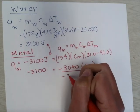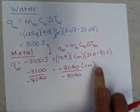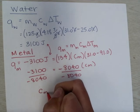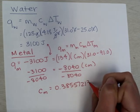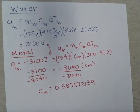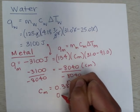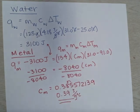Now my negatives cancel. My specific heat can't be negative. But negative 3,100 divided by negative 8,040 gives me a specific heat of the metal to be 0.385572139. That's a lot of digits, and I don't need that many digits. So because I only have two significant digits, I'm going to round this up and record this as 0.39 joules per gram degree Celsius as my specific heat of that metal.